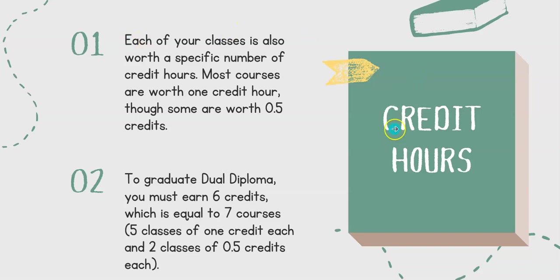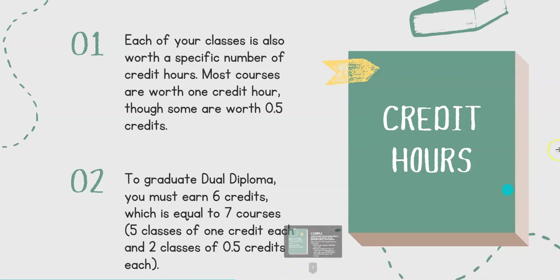Another thing is credit hours. Each of your classes is also worth a specific amount of credit hours. Most courses are worth one credit hour, though some are worth 0.5 credits. To graduate dual diploma, you must earn six credits, which is equal to seven courses, since five classes are one credit each and two are half a credit each.